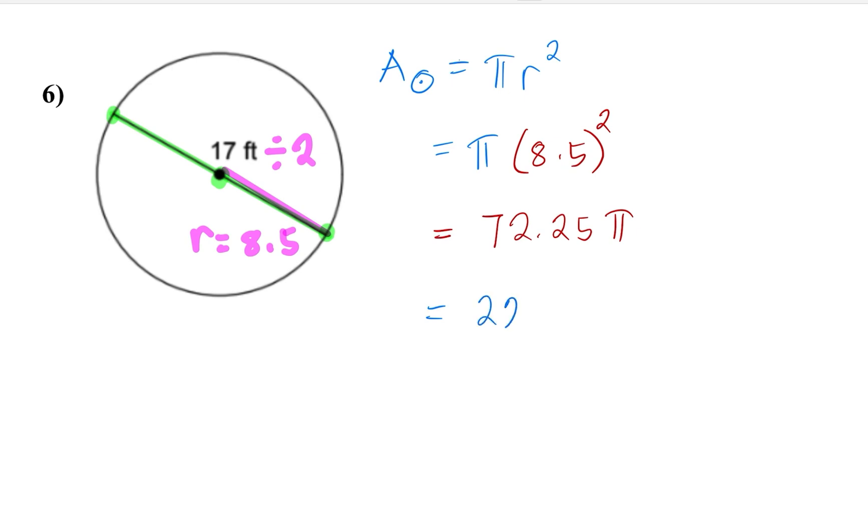And we substitute the value of pi. We should get about 226.98 and so on. However, because we are asked to round our answer to the nearest tenths, our answer is going to be approximately 227 feet square.